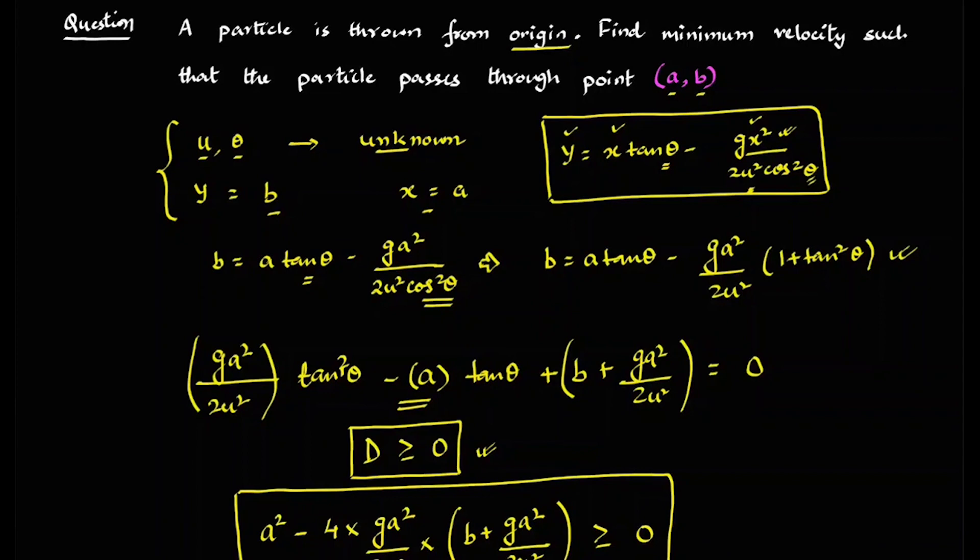Another way of approaching is we can differentiate in form of, because we have to find the minimum U. So DU by D theta because U and theta are dependent to each other and therefore we can actually differentiate this equation in form of DU by D theta and find the minimum U from there. Again you can try both the approaches and let me know in the comment box that which approach is much simpler.